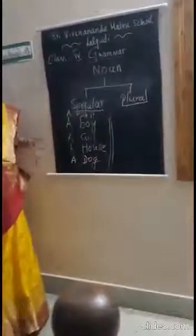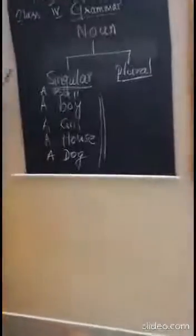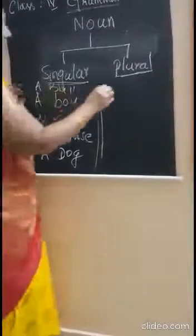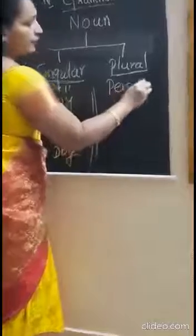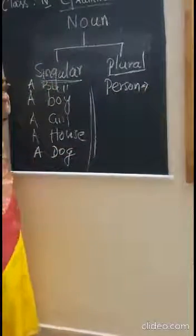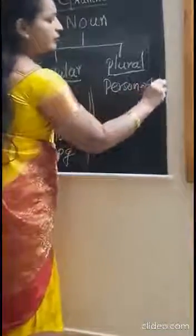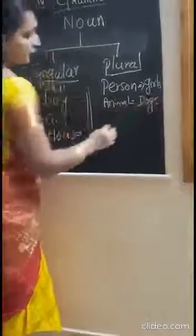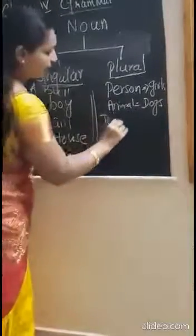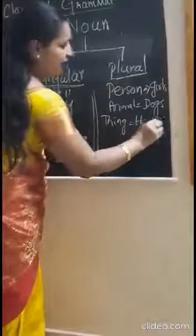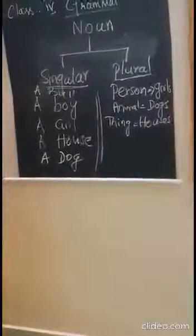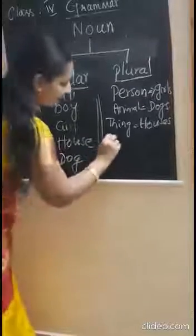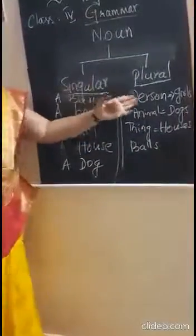Let's see the examples for plural noun. For person, you can say girls. For animal, you can say dogs. For place, you can say houses. And for thing, you can say balls. This is the example for plural noun.